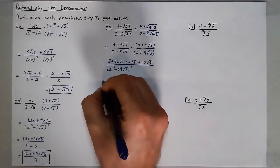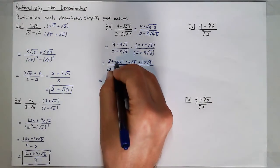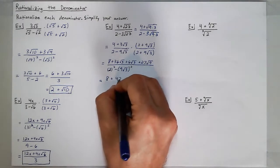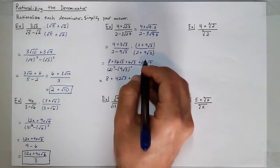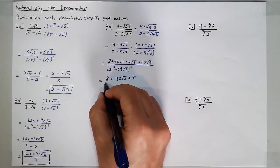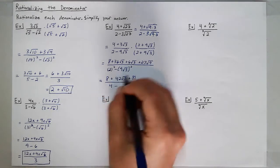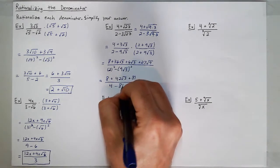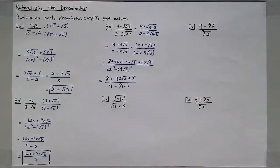My numerator is 8 plus 36 square roots of 3 plus 6 square roots of 3, which is 42 square roots of 3, plus 27 times 3, which is 81. All over 4 minus 9 squared times 3, which is 4 minus 243.